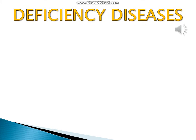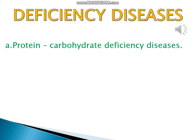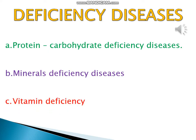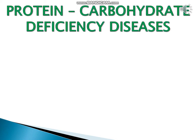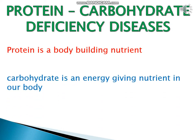Let us learn more about deficiency diseases. Deficiency disease is divided into three main types: protein and carbohydrate deficiency disease, mineral deficiency disease, and vitamin deficiency disease. Protein is a body-building nutrient and carbohydrate is an energy-giving nutrient in our body.